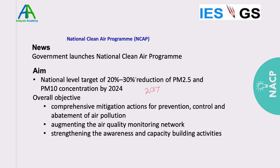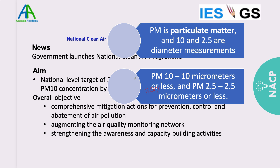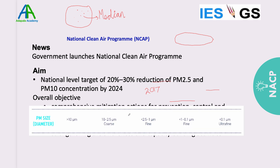PM denotes particulate matter, and 10 and 2.5 denote the diameter measured in micrometers. These are suspended particles in air. If the median diameter of the particles is less than 10 micrometers, they are classified as PM 10. If the median diameter is less than 2.5 micrometers, they are called PM 2.5. There can be different classifications like PM 20, PM 1, PM 0.5, but for air pollution the most relevant are PM 10 and PM 2.5.